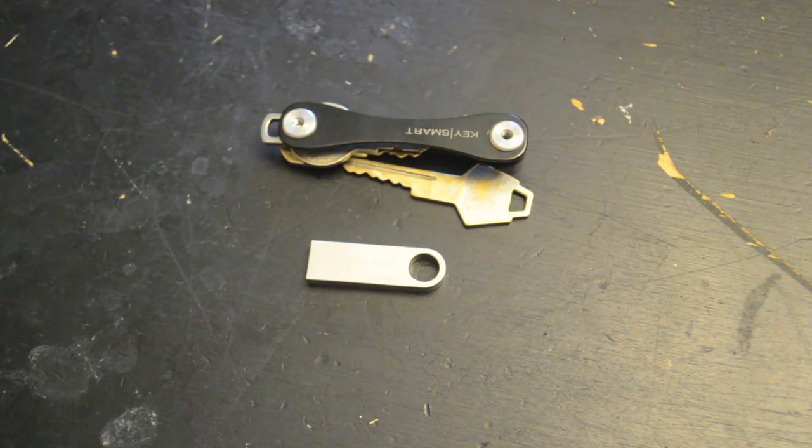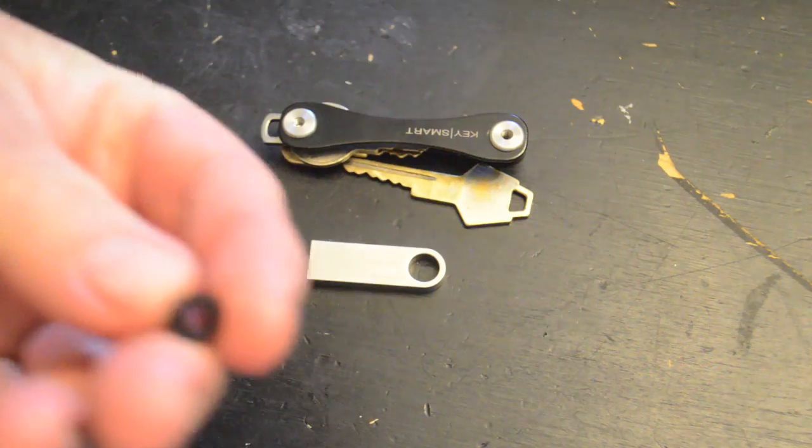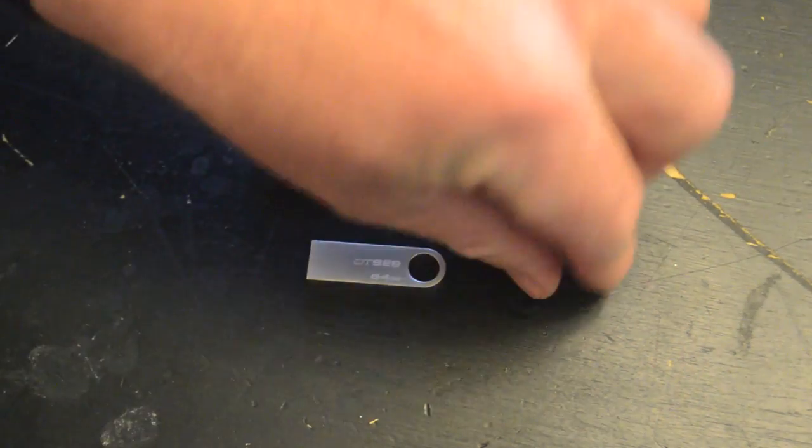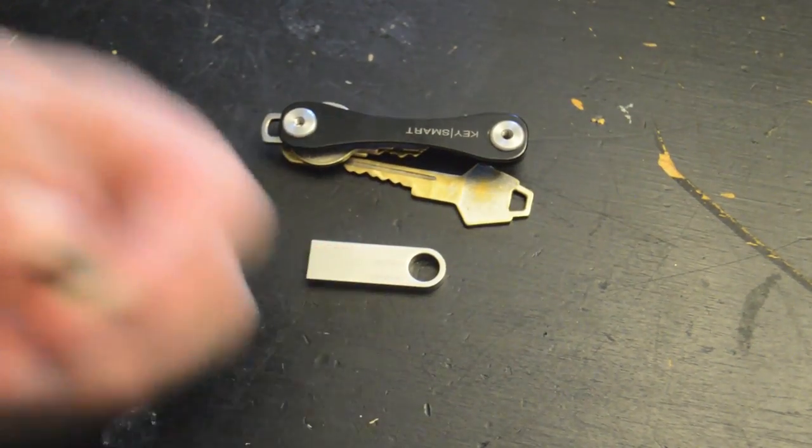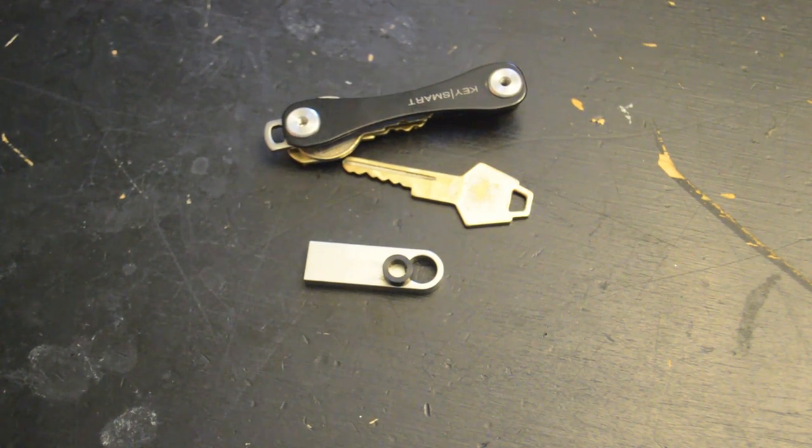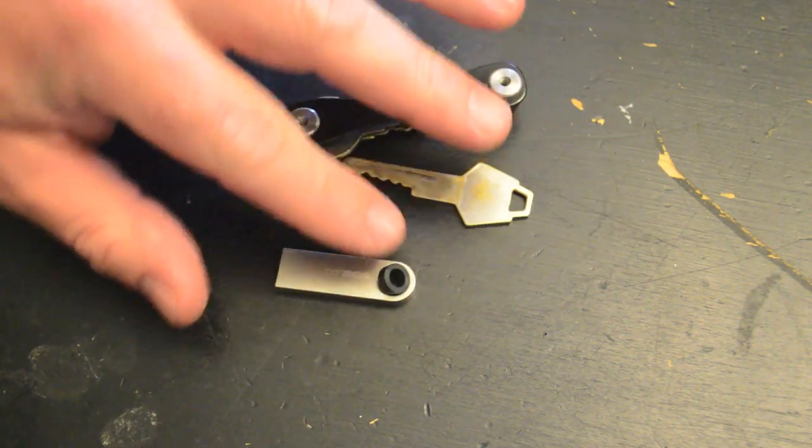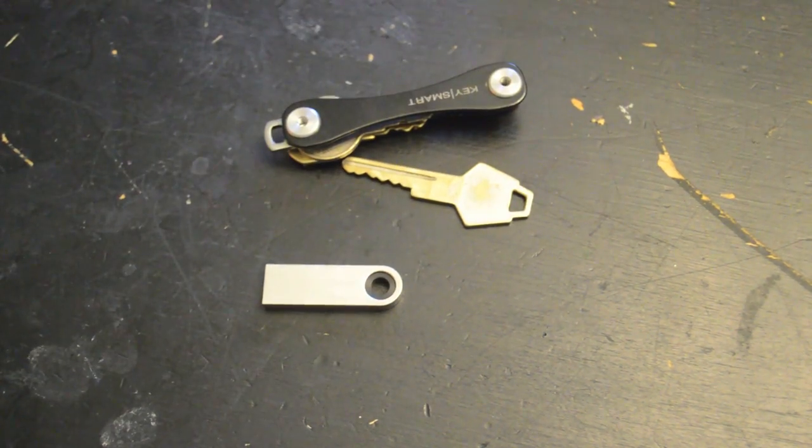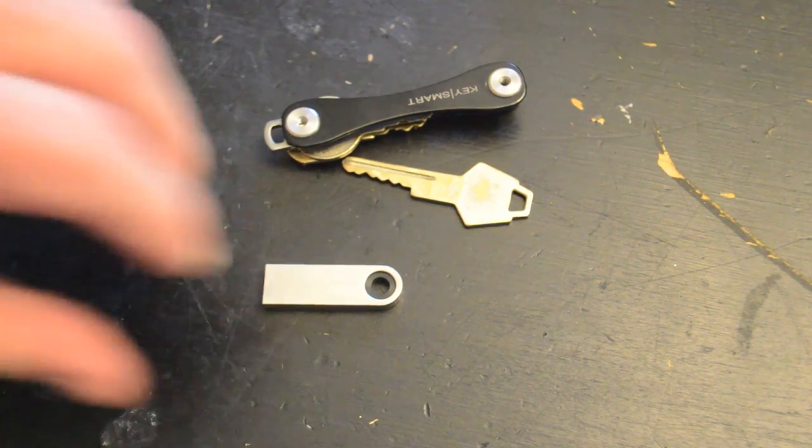So I went on Amazon and started looking for the bushings. This bushing, through KeySmart, is like $19. So in Googling, I found a company called Forza Sports that sells it for $6.95.